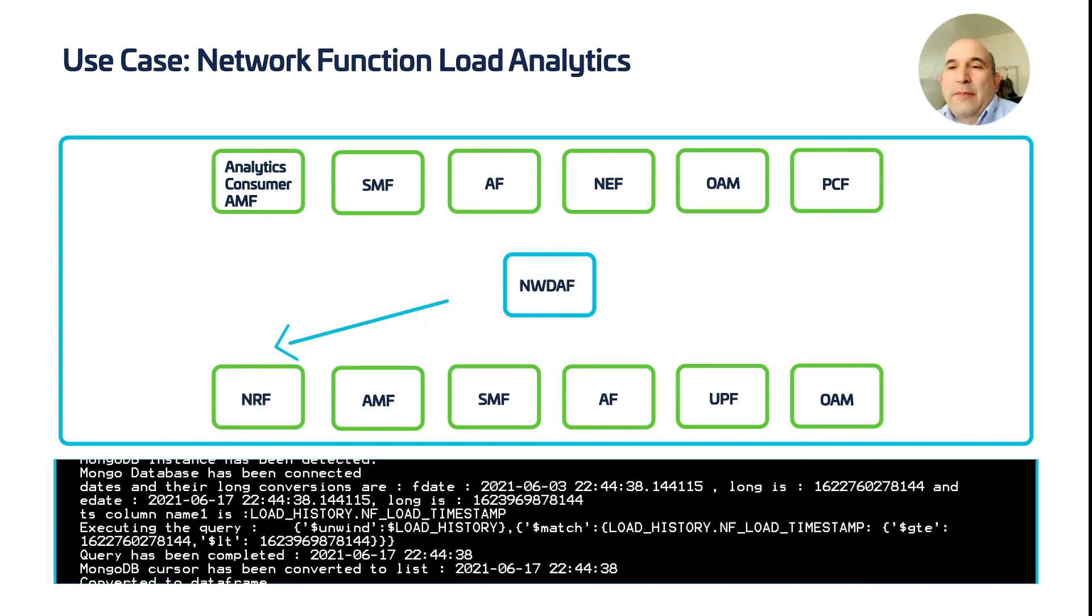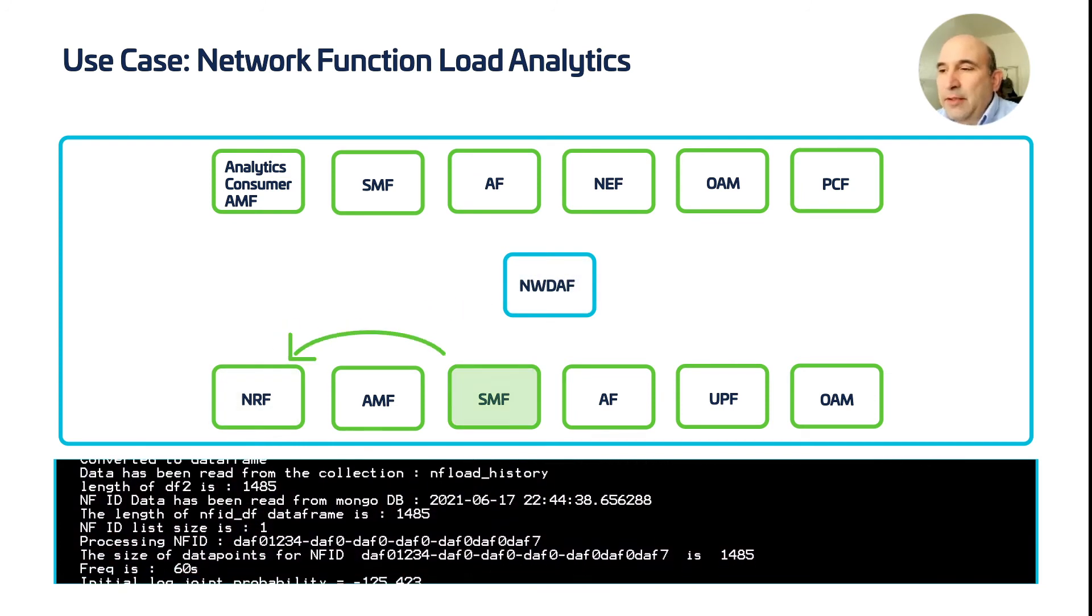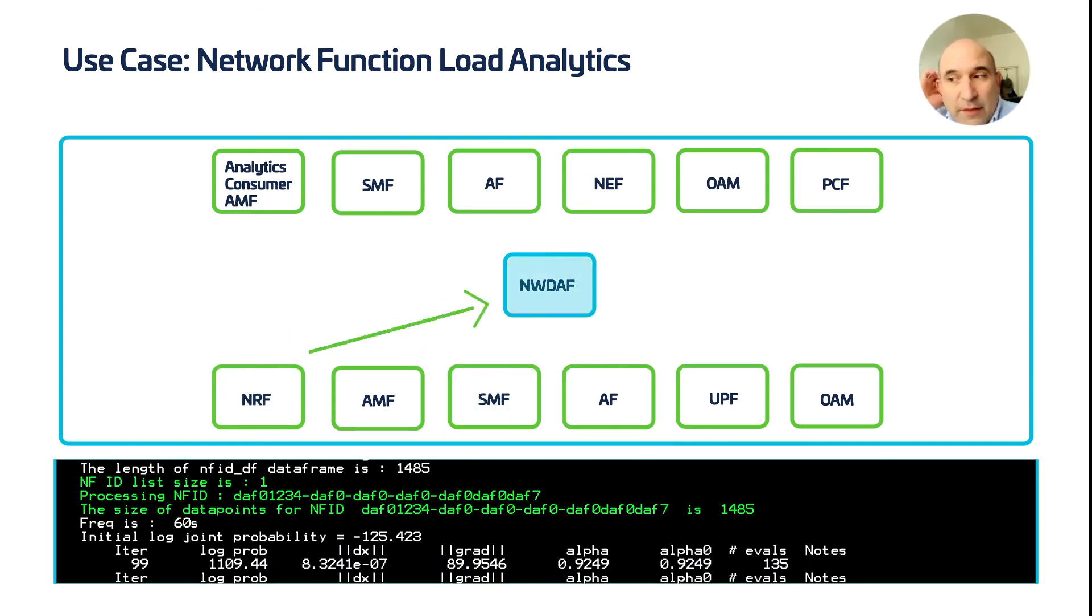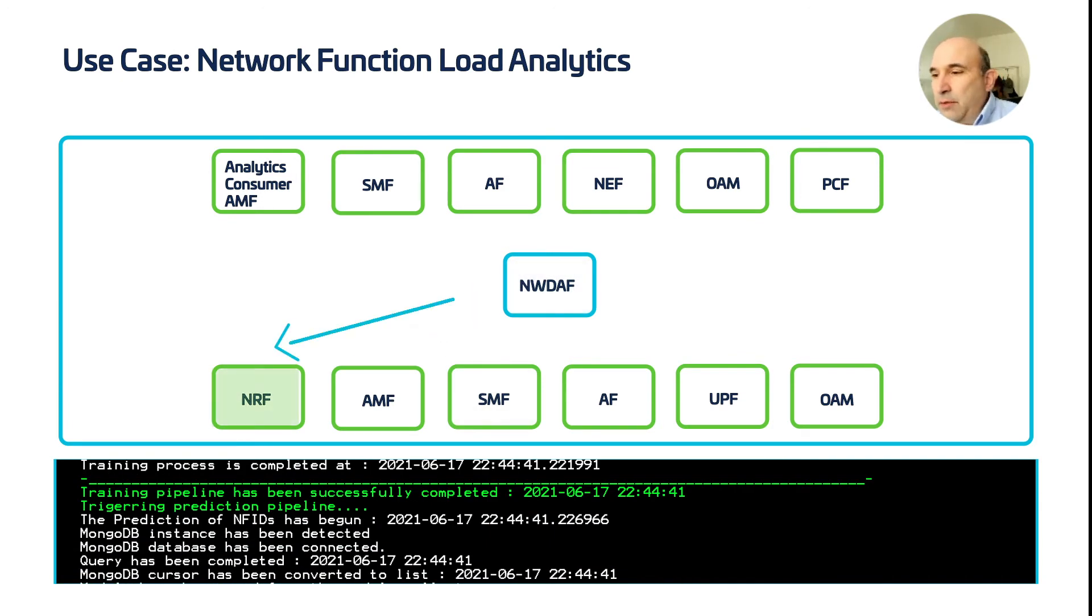To train this analytics model, we run an analytics pipeline against the historical data. For this SMF instance, beginning David Alpha Foxtrot, we see the analytics training pipeline reads 1485 historical data points from the database. The model's now trained and can compute predictions for the future.